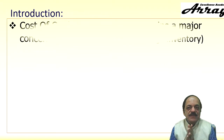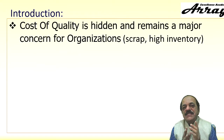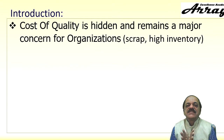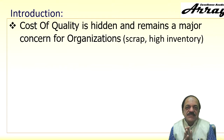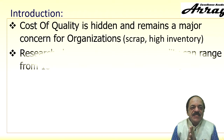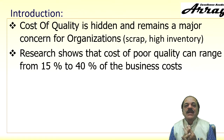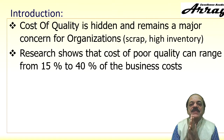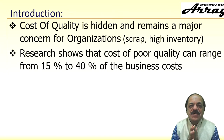Let us understand the background. Cost of quality is a hazard — this is the biggest danger. Cost of quality is hidden and remains a major concern for organizations. Some elements of cost of quality include scrap or high inventory. Cost of quality is not good money — it is actually waste to be avoided. Research shows that cost of poor quality can range from 15% to 40% of business cost. This is a huge amount of money, unfortunately not revealed in financial reports.